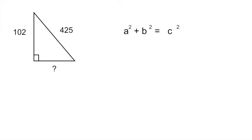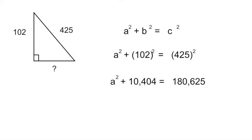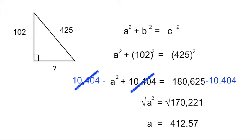Each of the legs squared equals the hypotenuse c squared. In this case the hypotenuse is 425, so you would plug these numbers into your equation. Then you square each of these numbers and the next step is to isolate your a. You subtract 10,404 from each side of your equation. On the left side that cancels out and then a² = 170,221. Now you have to take the square root on both sides, which tells you that a = 412.57. So the answer is A.